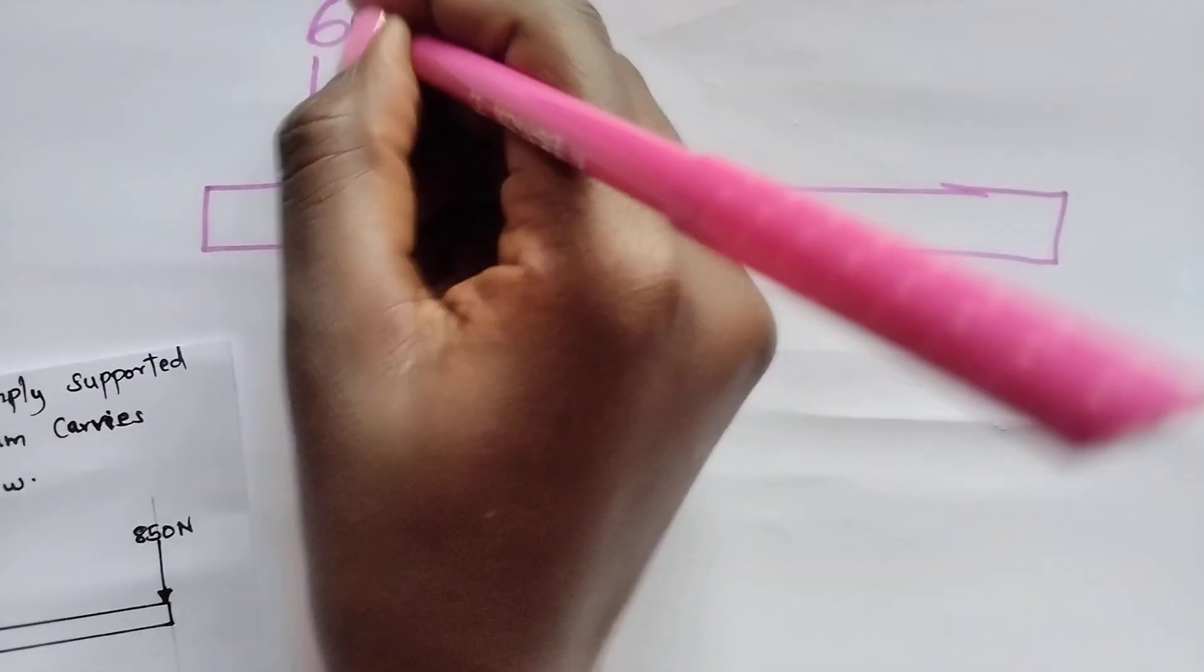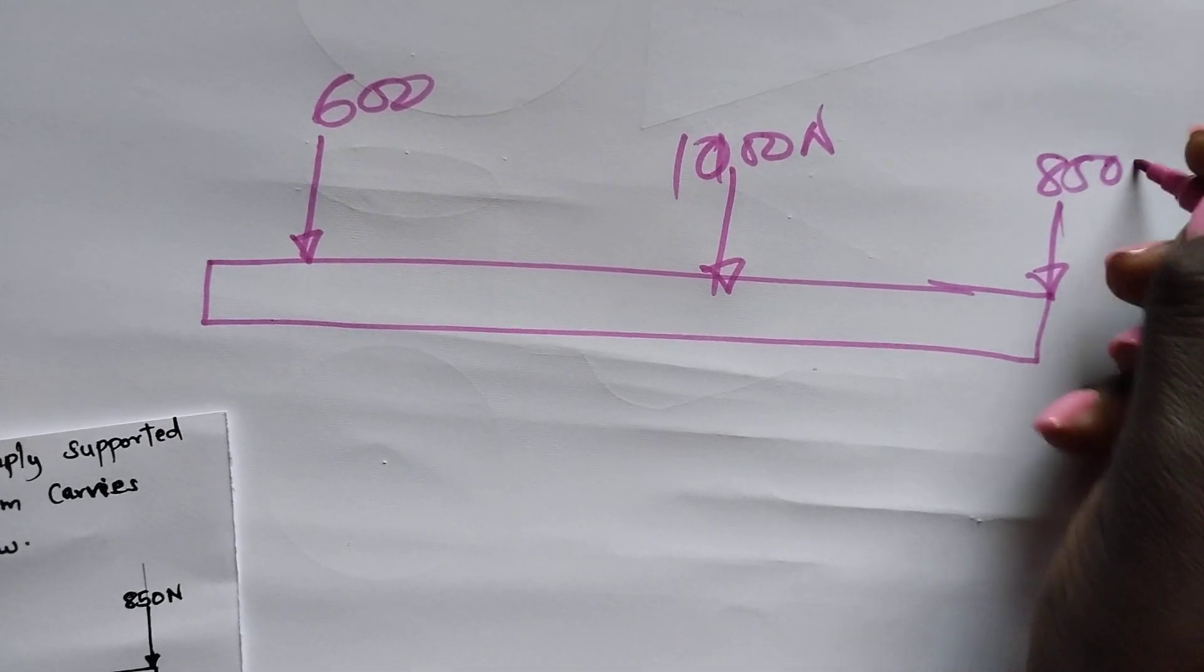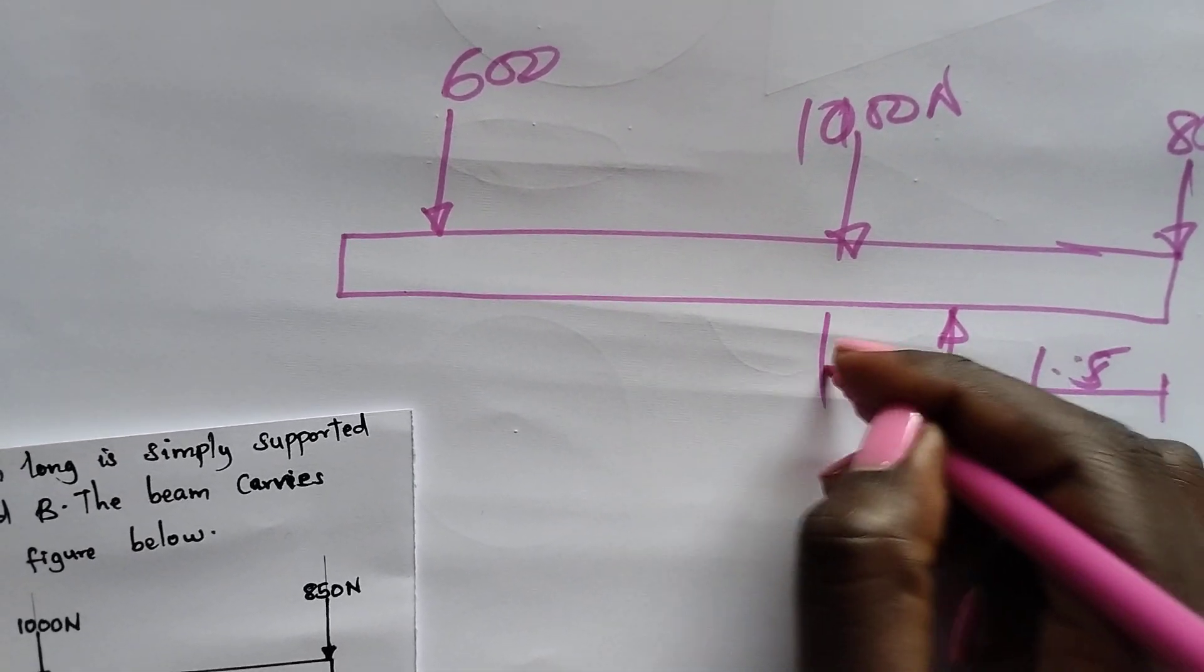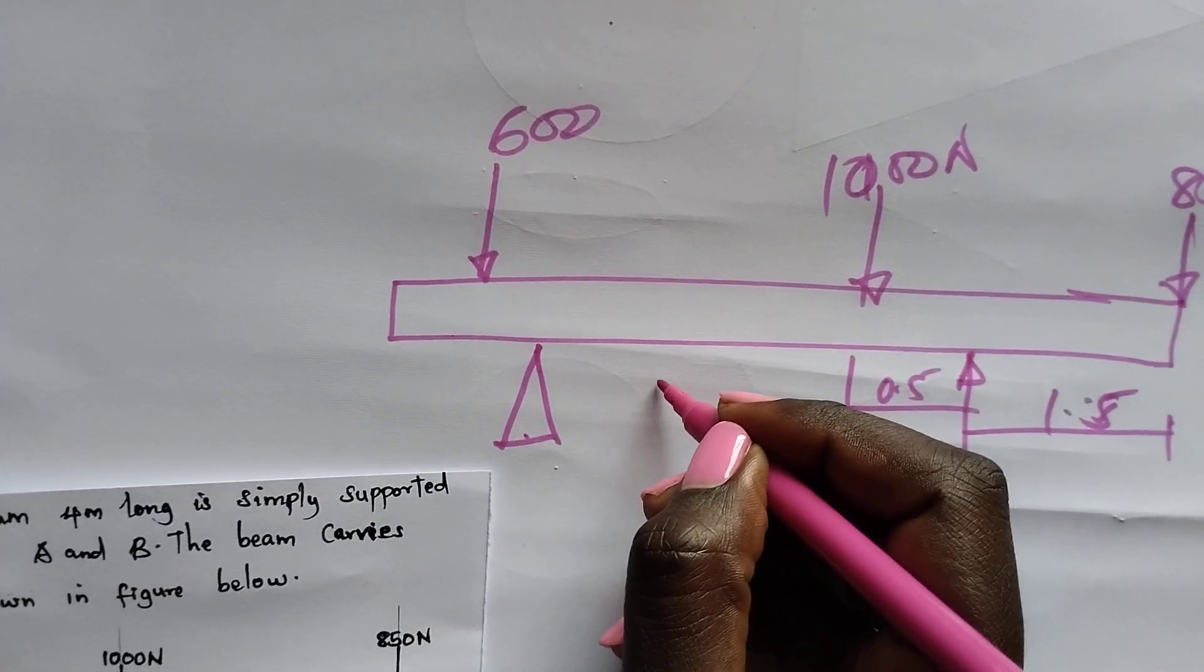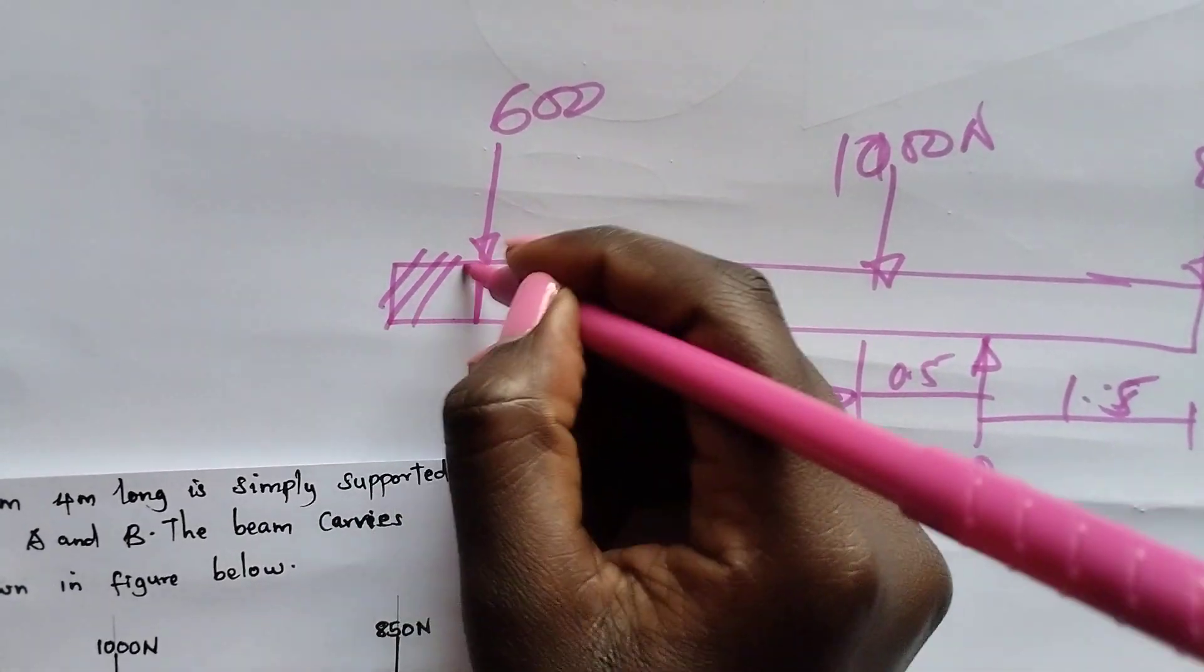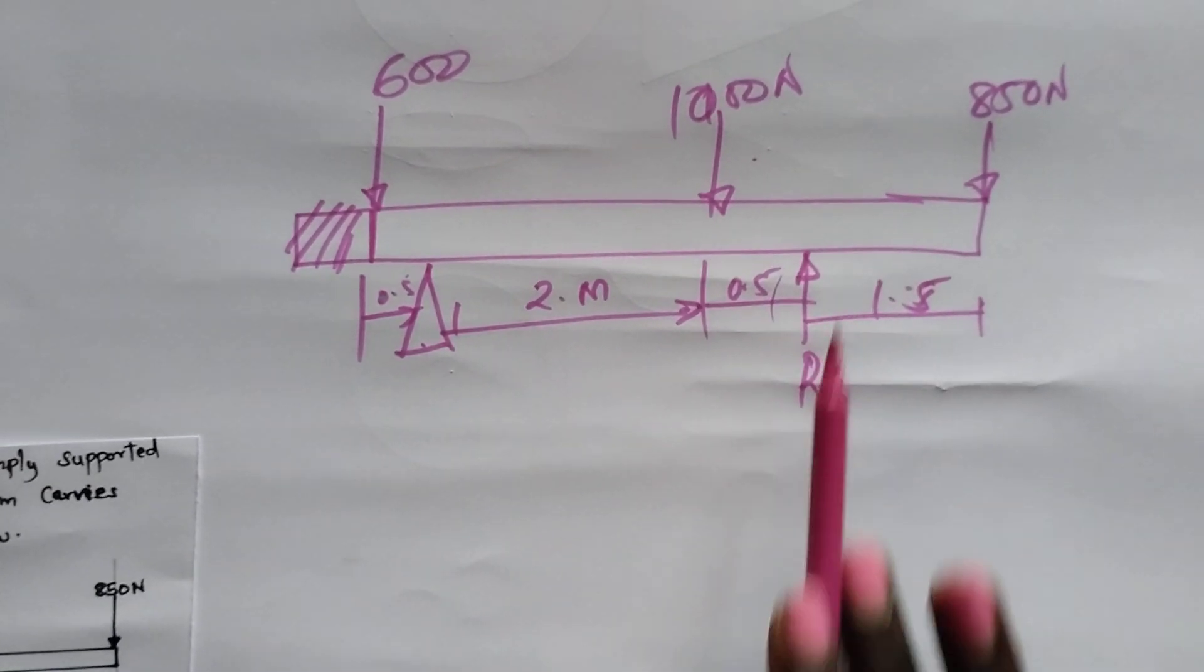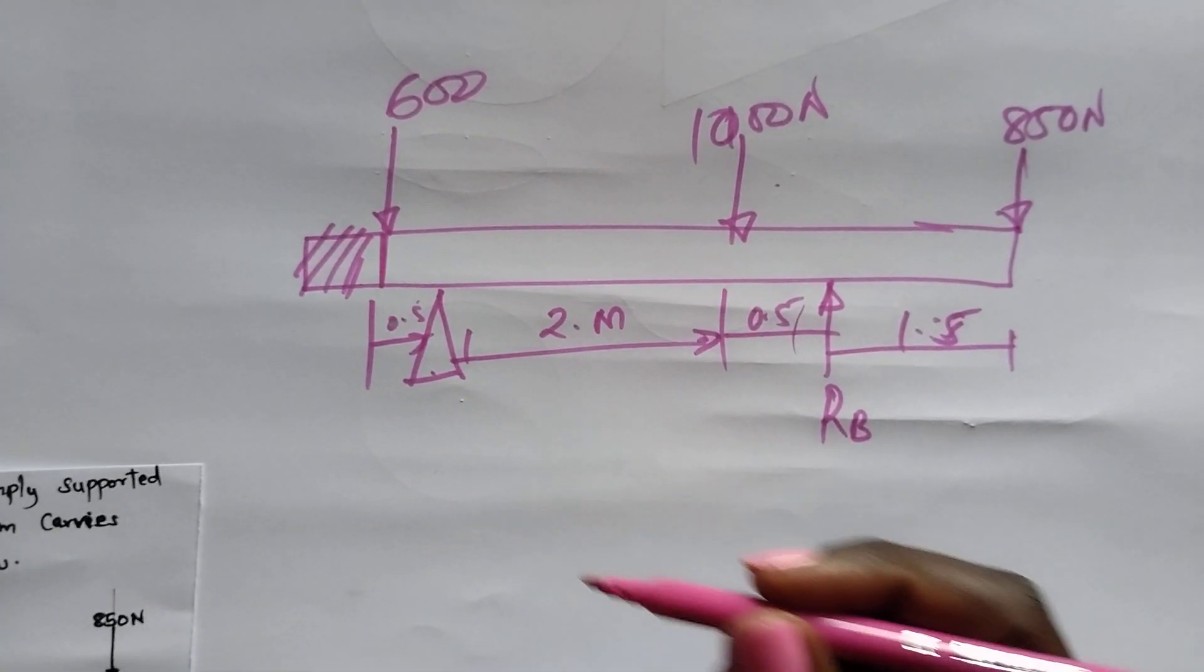So I'll have this as 600N, 1000 newtons, and 850N. Now, remember I said that this would now be a reaction upwards. Let me call it RB. I'm given the distance as 1.5, this is 0.5, and this is my point of support. This one to 1000 is 2 meters. So the beam was 4m. Remember, this is the farthest side. So let's count this other end out. So the remaining distance is 0.5. I've simply translated this to be a force pointing upwards. So I'll have three forces pointing downwards and a single force pointing upwards.